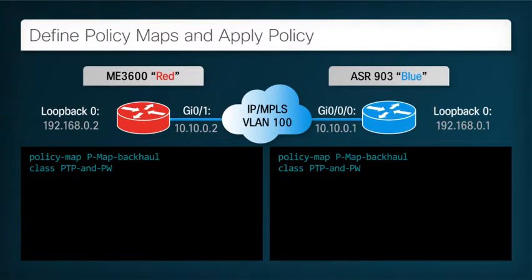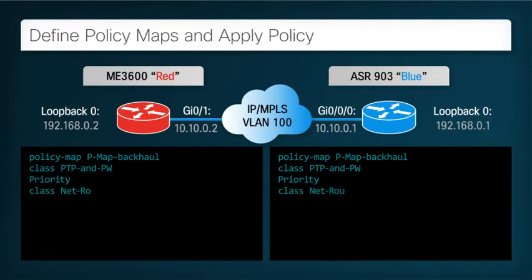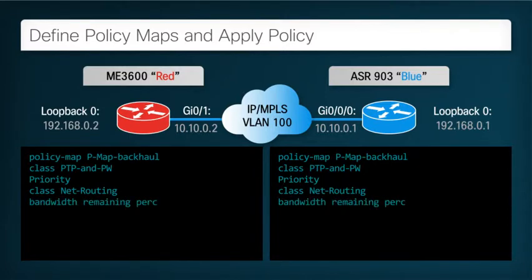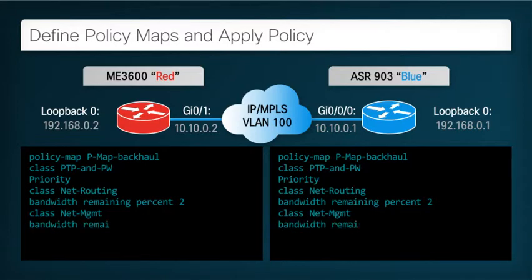So we use the class name for this traffic that we defined in the last step, and we assign this traffic to the priority queue with the keyword priority. The routing and network control traffic is also very important to the functioning and stability of the network. So we select the traffic in that class and guarantee this traffic a predetermined minimum portion of the network throughput — 2% in this case — by using the keywords bandwidth remaining. A similar construct is used to guarantee some bandwidth for network management traffic, and we allocate a nominal 5% for that.